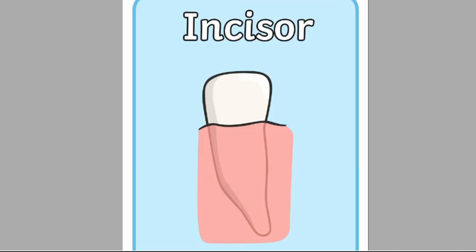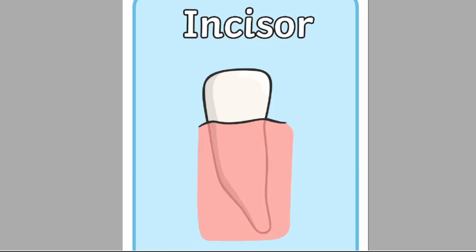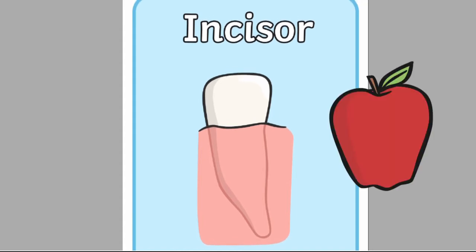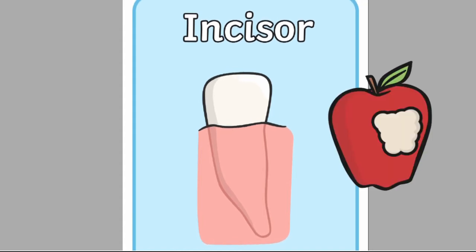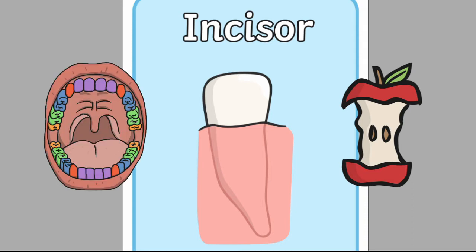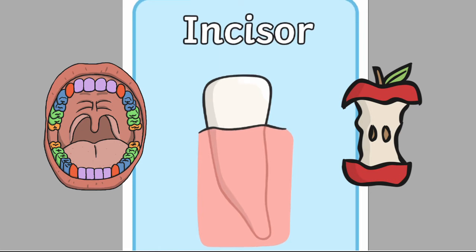Let's talk about the incisors. Incisors are used for biting and cutting food. Think about biting into an apple — it is your incisors that bite into the apple and cut it up. They're at the front of your mouth and you have eight of them: four at the top and four at the bottom.